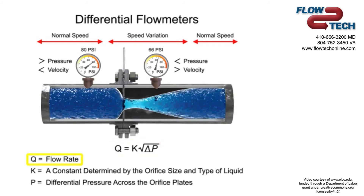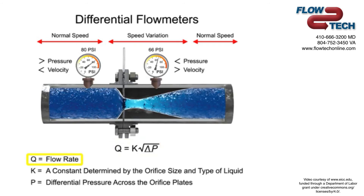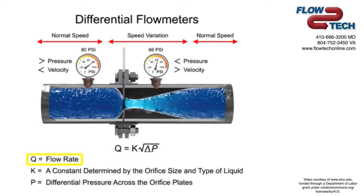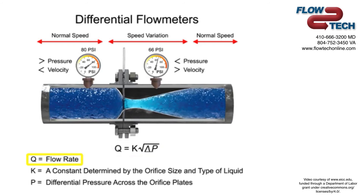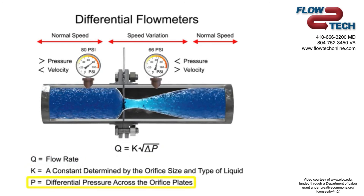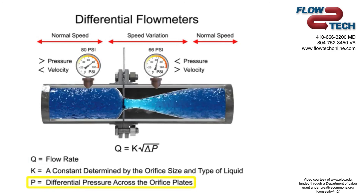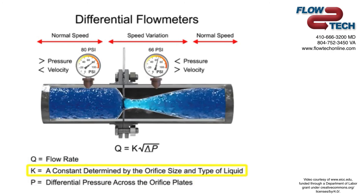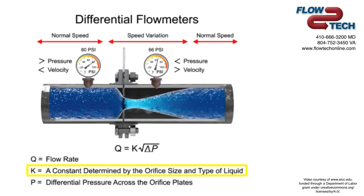The flow rate, Q, of a fluid through an orifice plate increases in proportion to the square root of the pressure difference on each side, multiplied by the K factor.